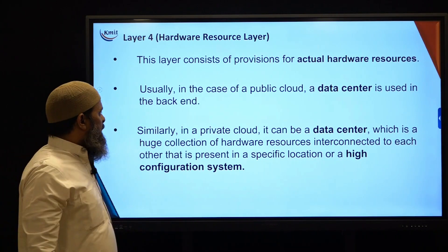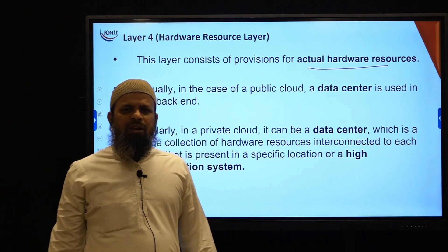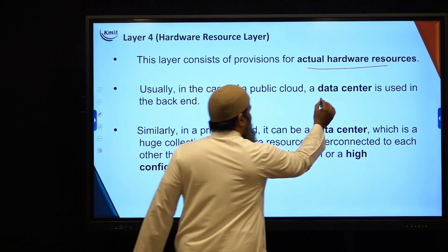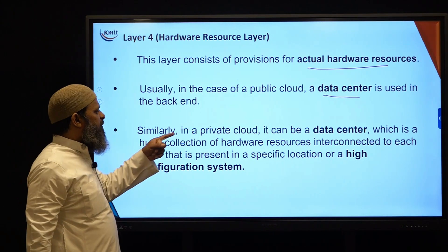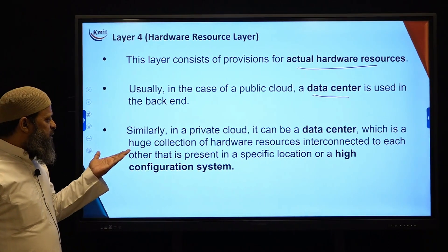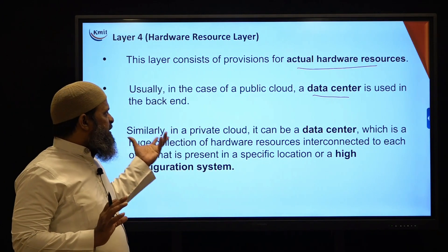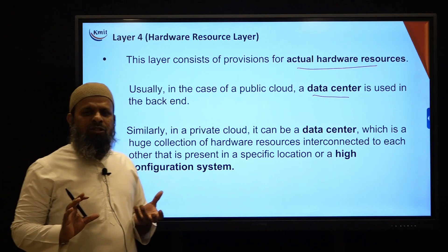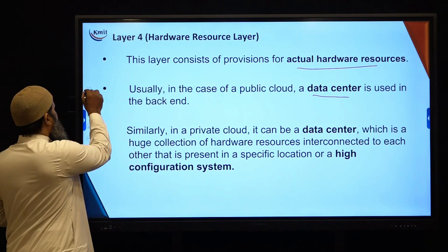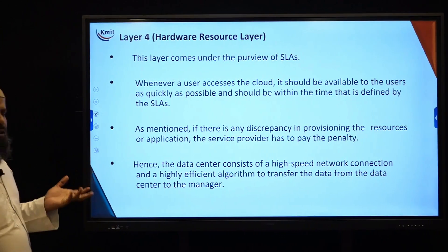The fourth and final layer is the hardware resource layer. This layer consists of provisions for actual hardware resources — how many machines are required, what services are required, and what type of service. In the case of public cloud, a data center is used in the back end. Similarly, in a private cloud, it can be a data center — a huge collection of hardware resources interconnected in a specific location — or a high-configuration system. All resources provided by the cloud, including servers and storage devices, fall under this layer, and it also comes under the purview of SLAs, so improper service results in a penalty.